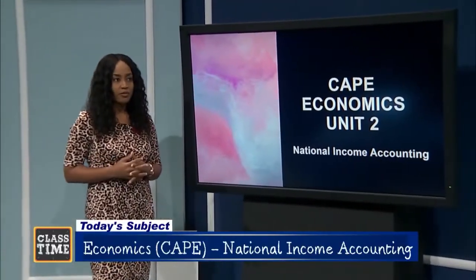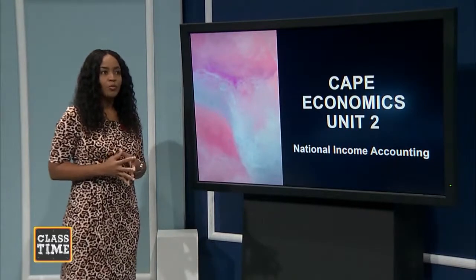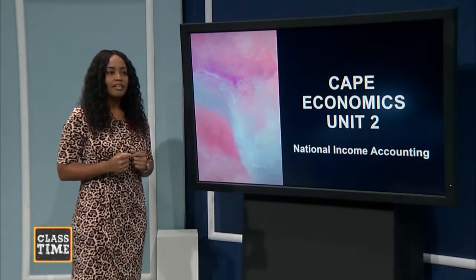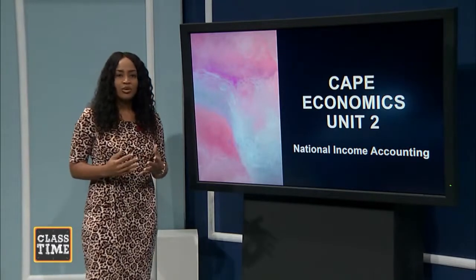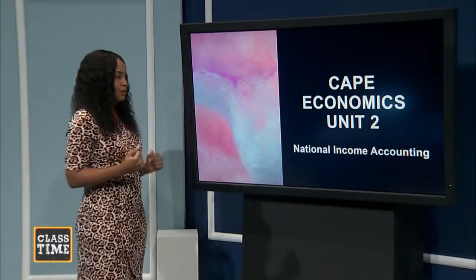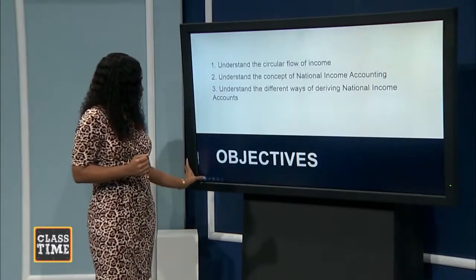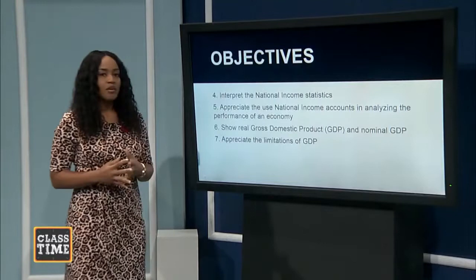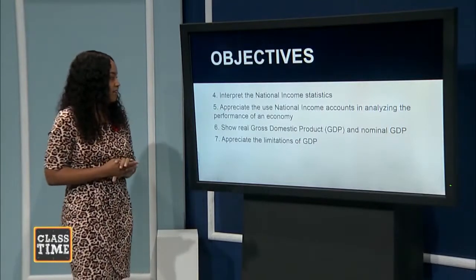You would recall I shared the objectives last week. We didn't complete all of those objectives, so we're going to continue today. Last week we looked at the circular flow of national income and some national income accounting statistics. Specifically, you were introduced to the concept of GDP. This week we are going to look at some other ways of deriving national income statistics.